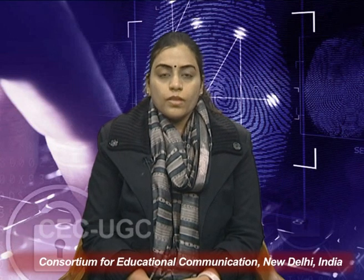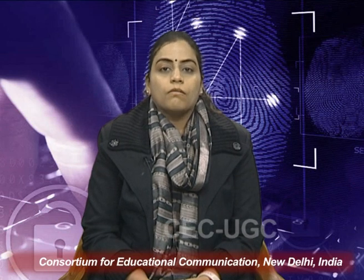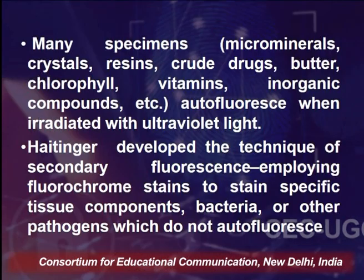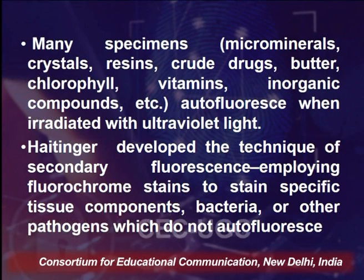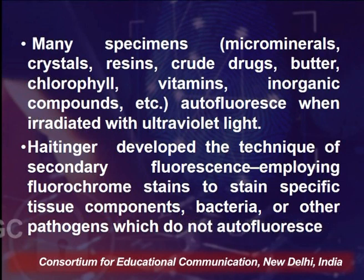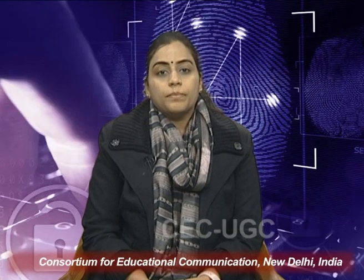Many specimens, for example microminerals, crystals, resins, crude drugs, butter, chlorophyll, vitamins, inorganic compounds, etc., show autofluorescence when irradiated with UV light. Hettinger developed the technique of secondary fluorescence employing fluorochrome stains to stain specific tissue components, bacteria, or other pathogens which do not show autofluorescence.